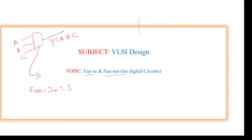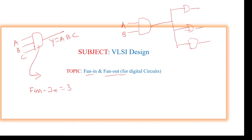For example, I am taking one gate having two inputs A and B. Fan-out means the number of outputs the gate can drive. I am assuming here one gate, one more gate, one more gate, and one more gate. So this present gate is driving four outputs — first gate, second gate, third gate, and fourth gate. Therefore the fan-out for this circuit is equal to four.